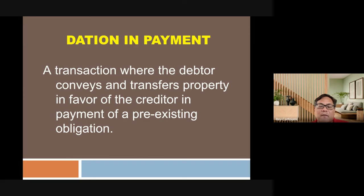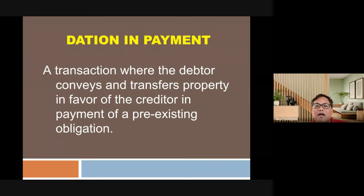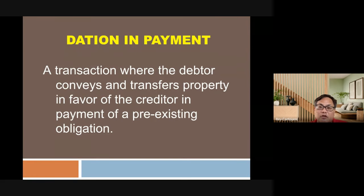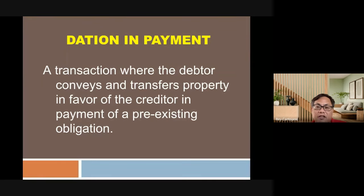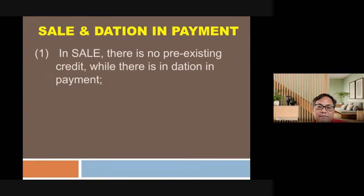Dacion en pago is a transaction where the debtor conveys and transfers property in favor of the creditor in payment of a pre-existing obligation. There is an existing debt, and the debtor transfers property in settlement of that debt. The proper documentation for this is the dacion en pago, not a deed of sale in payment of a debt.